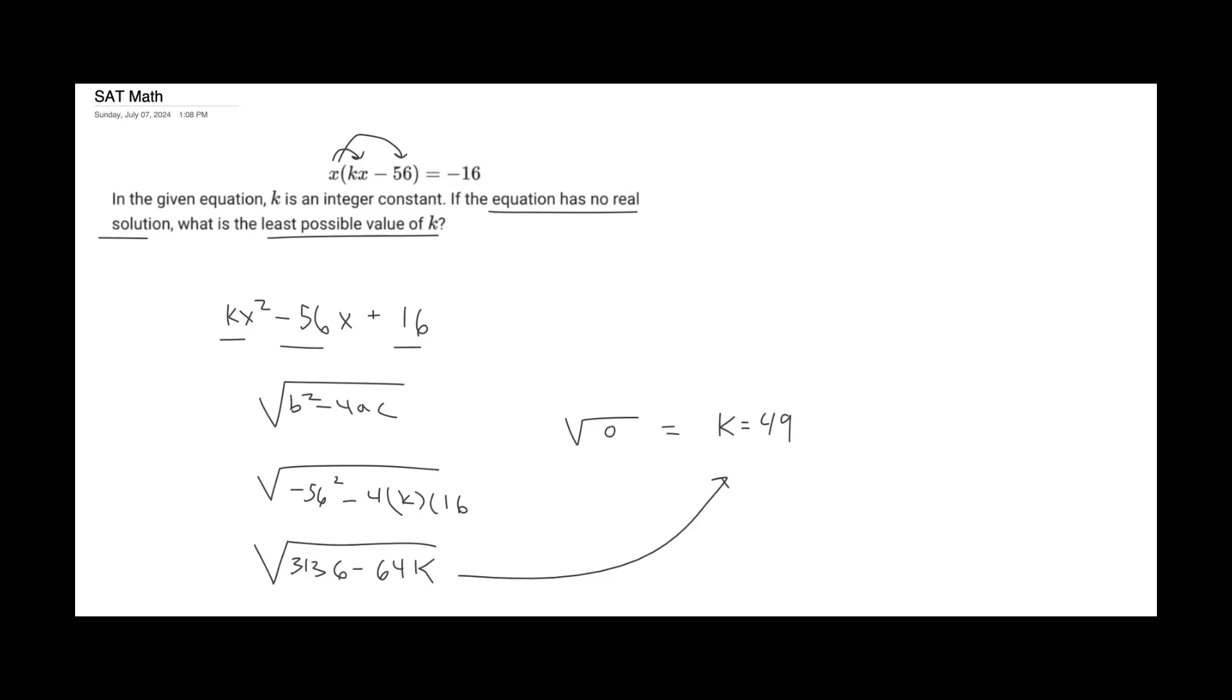So if k is equivalent to 49, we would have 3,136 minus 3,136. And then we would only have one real solution. But in our case, we want no real solutions. And so we'll just take one integer value above 49.